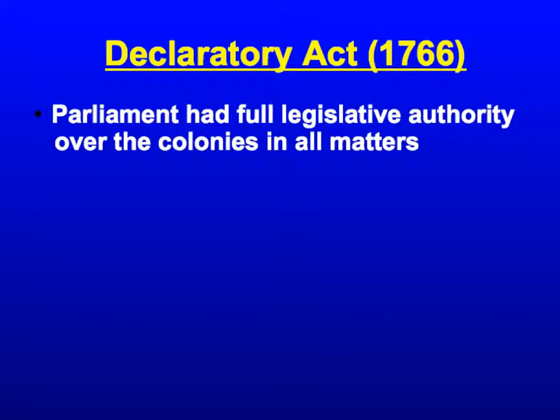The colonies sometimes had a little autonomy and freedom to govern themselves. But the Declaratory Act was passed in 1766, which stated that Parliament had full legislative authority over the colonies in all matters. Now Parliament was telling all the colonies what to do and what laws they had, regulating the colonies more directly, which really angered and frustrated the colonists.